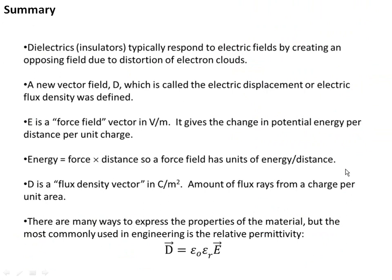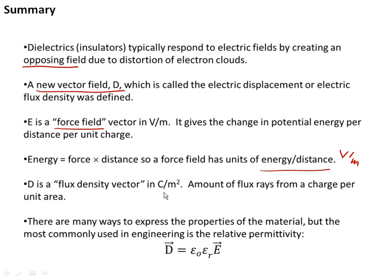Let's summarize quickly. Dielectric or insulating materials respond to electric fields by creating an opposing electric field inside them, which comes from the distortion of the electron clouds within the molecules or atoms that make up the material. To deal with this, we define a new vector D — the electric displacement or electric flux density — related to E. E is a force field that pushes on other charges, with units of energy per distance — volts per meter. D is a flux density with units of coulombs per square meter, representing the amount of flux from a charge per unit area, and it's independent of material.